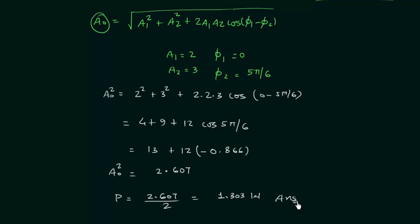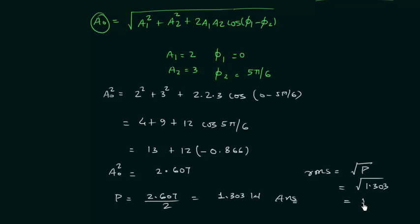The RMS value is equal to the square root of the average power P. So √1.303 = 1.141. This is how you use this formula to find the average power and RMS value.